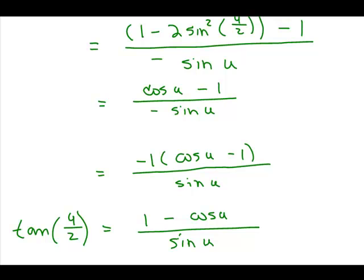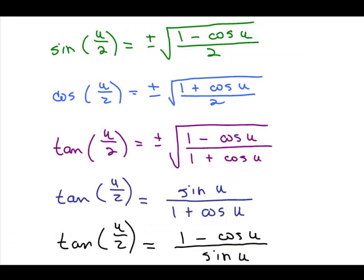So here are the five half angle formulas. Remember you can use any letter — I used U, but you could write sine of X over 2, sine of theta over 2, et cetera. The idea is: if you know the sine and/or cosine of an angle, you can figure out the sine, cosine, or tangent of half that angle using these formulas. We'll do some problems using these formulas in another video.